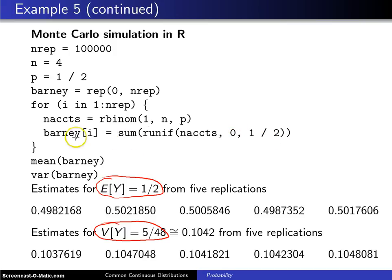And that will give you the i-th experiment, and you place that into the i-th element of the vector named Barney which started at zeros.